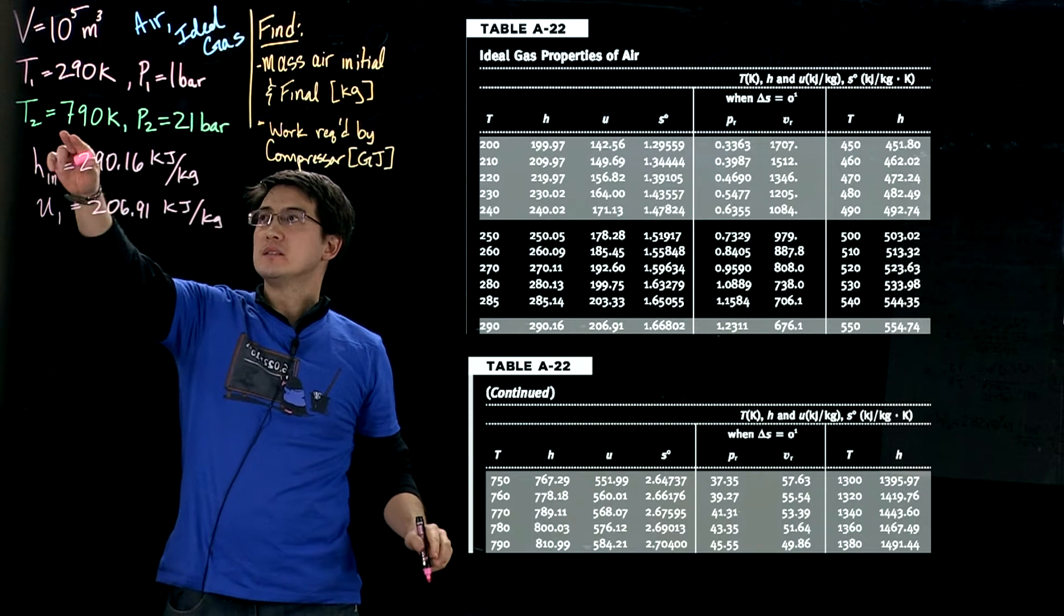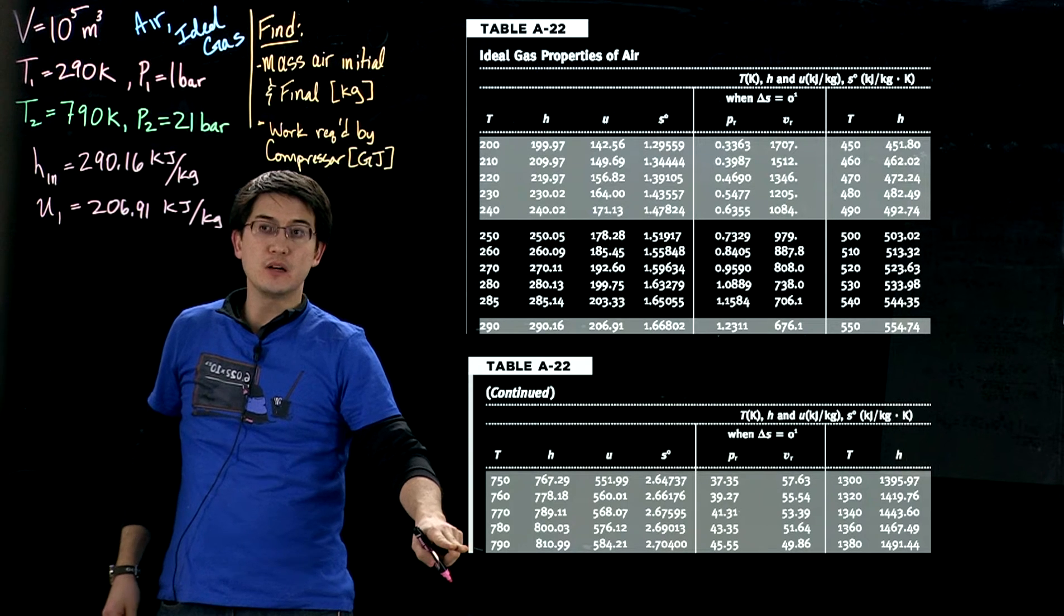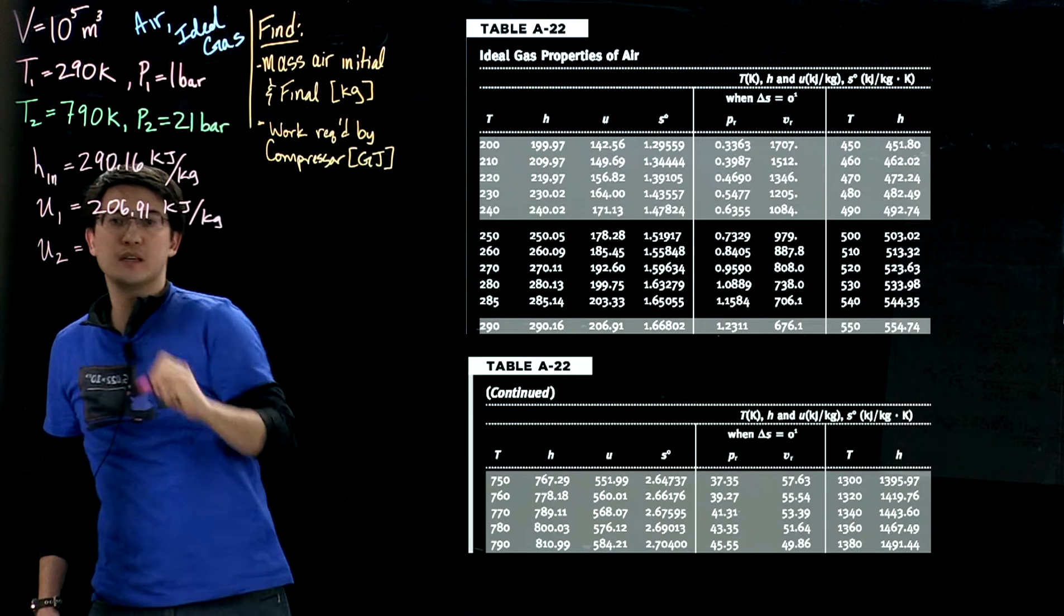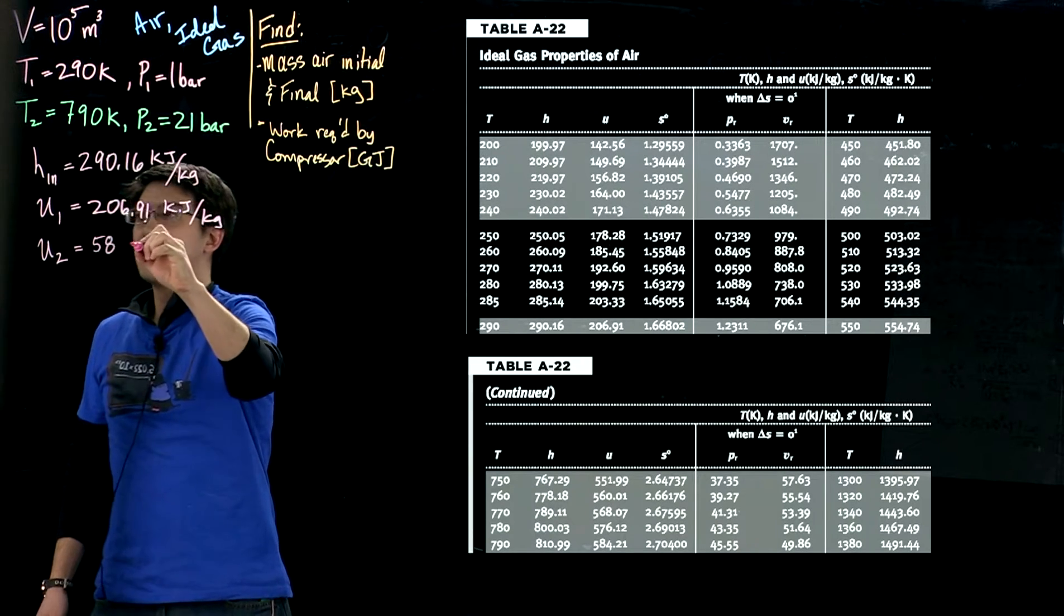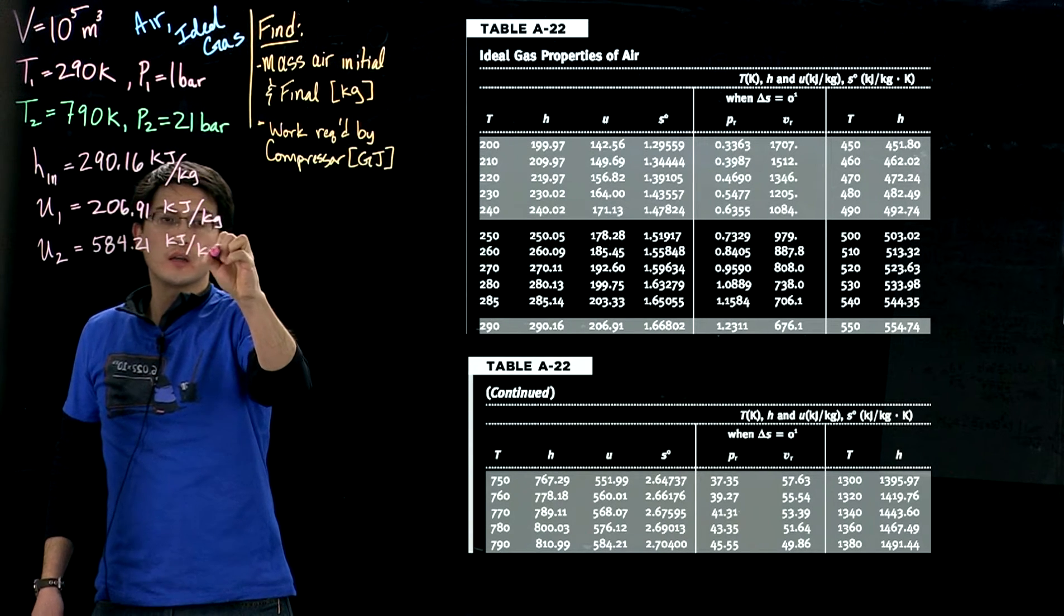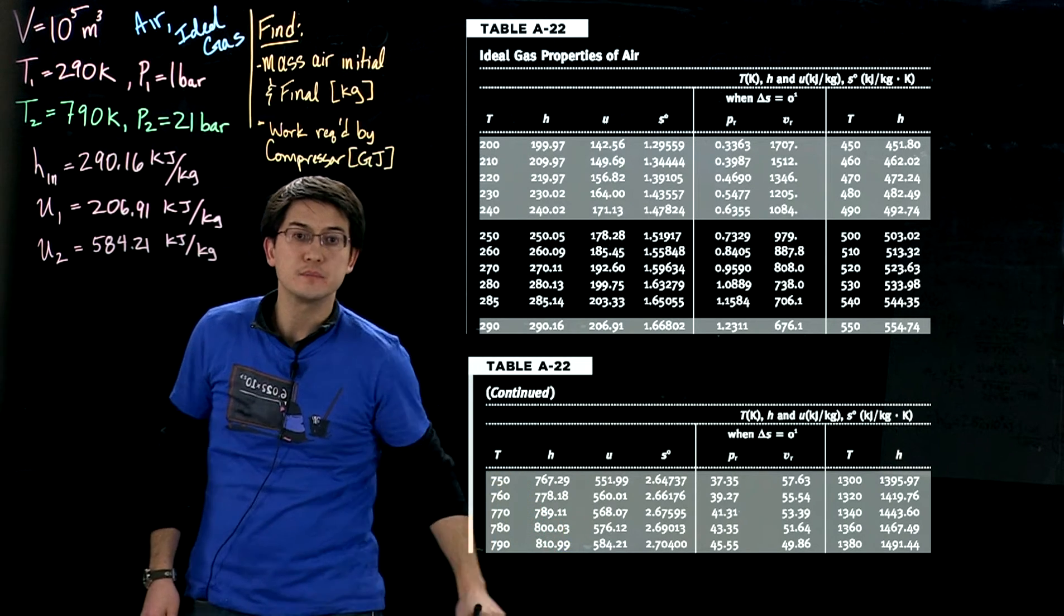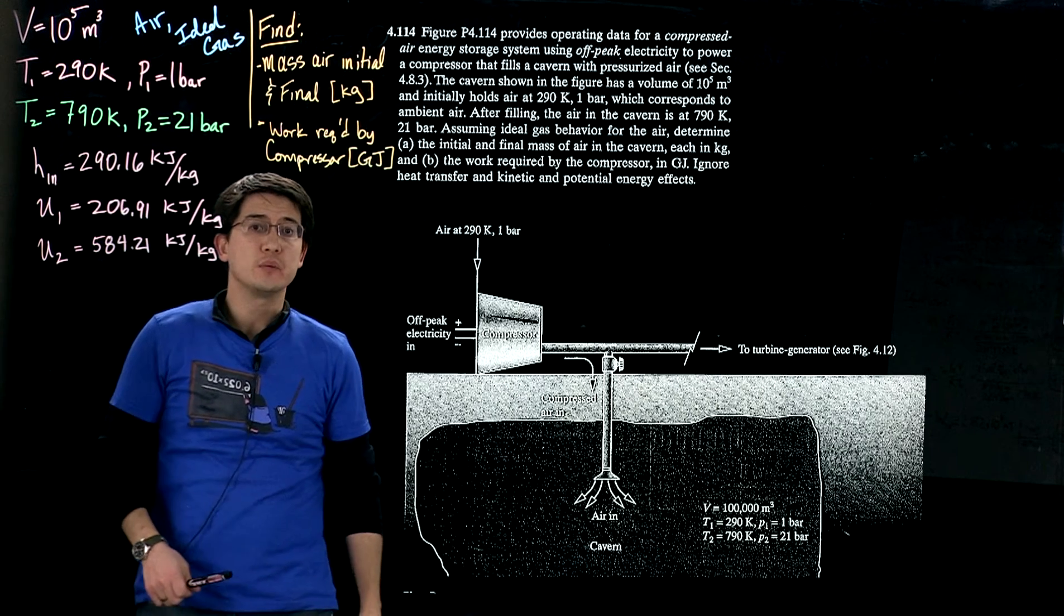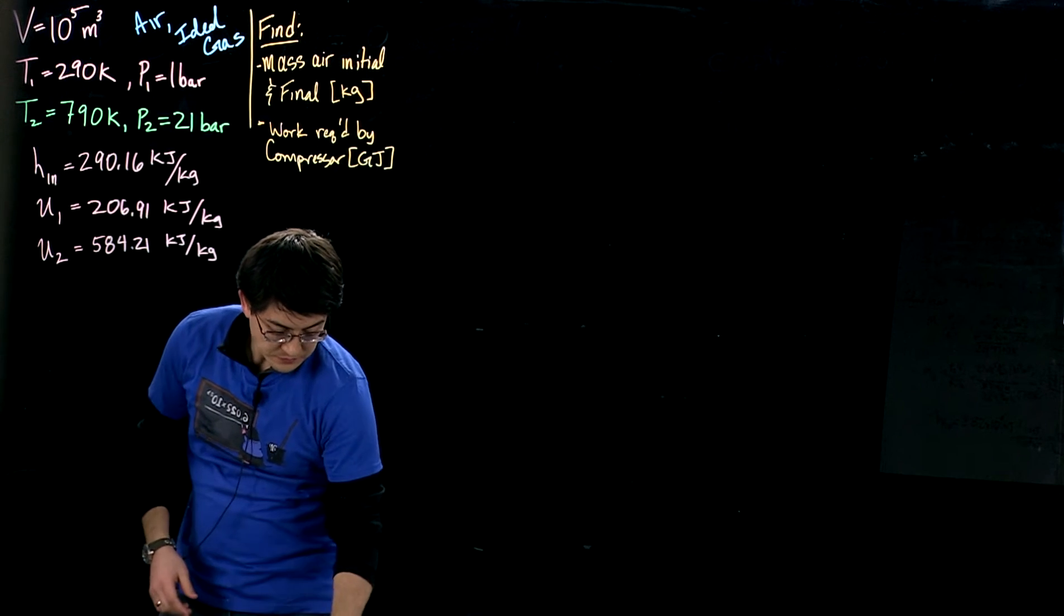Next, we're going to need at state two, the final state at 790 Kelvin, which is down here. We'll need that specific internal energy. So I'll call this state two, the final state. We know from the table it's 584.21 kilojoules per kilogram, and you can see that right around here. So this is our problem statement. If you need to read it again, go ahead and pause here.